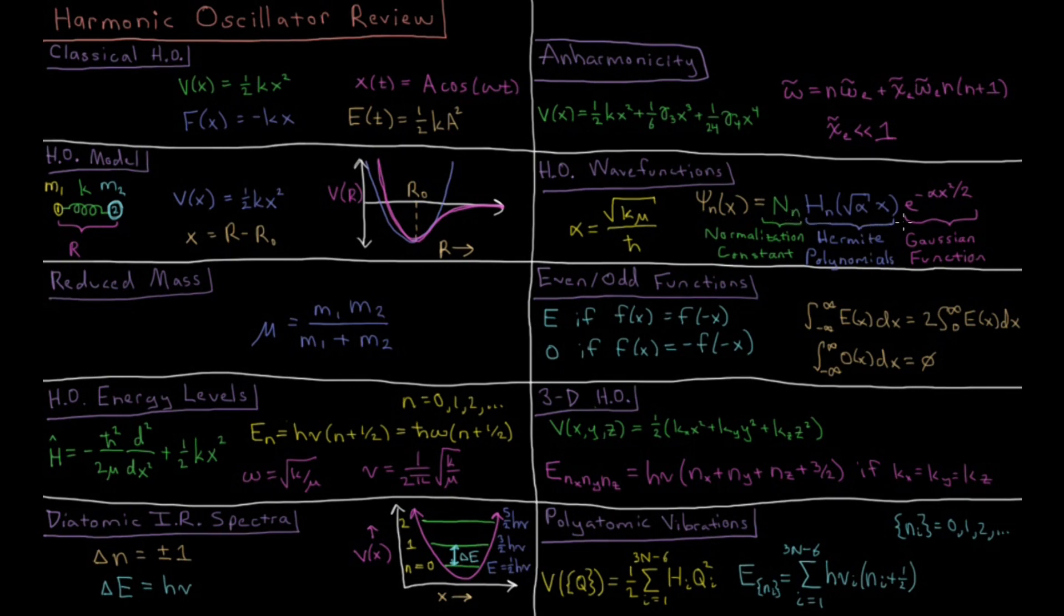We have a polynomial called the Hermite polynomials, which obey a certain law for how they're described. The function that you plug into the Hermite polynomials is not just x; it's the square root of this thing called alpha times x.